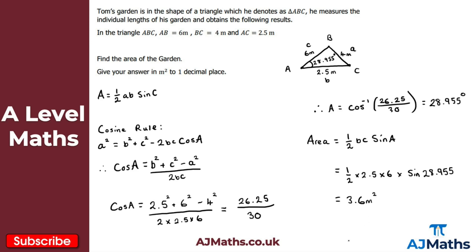Note that it doesn't matter which angle you choose to find with the cosine rule — you could instead find angle C and use the original area formula directly. Either way you should arrive at the same answer of 3.6 m² for the area of the garden. That brings us to the end of this video on solving triangle problems.